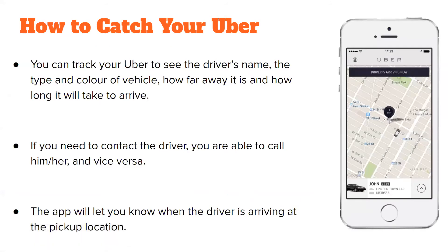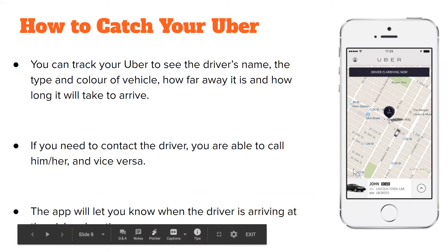After booking, you can track the Uber to see the driver's name, the type and color of the vehicle, how far away it is, and how long it'll take to arrive. At the bottom of the phone it will show the driver's name, type of car, and license plate, as well as a picture of what the car looks like.